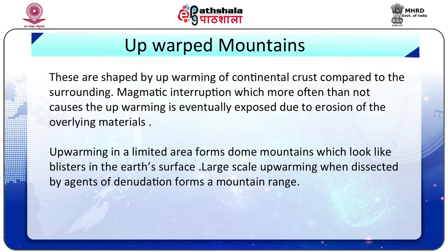The next type is upwarped mountains. These are shaped by warping of continental crust compared to the surrounding area. Magmatic eruptions more often than not cause the upwarping, eventually exposed due to erosion of the overlying materials. Upwarping in a limited area forms dome mountains which look like blisters on the earth's surface. Large-scale upwarping when dissected by agents of denudation forms a mountain range.